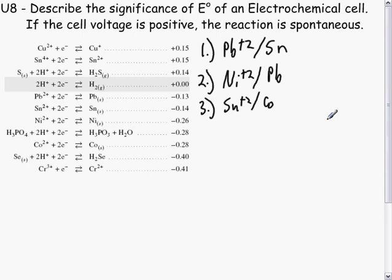This is a review video for May 24th, specifically describing the significance of E-naught of an electrochemical cell. The significance of the cell voltage is that if the cell voltage is positive, the reaction is spontaneous.